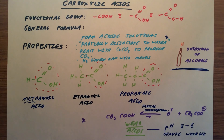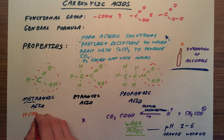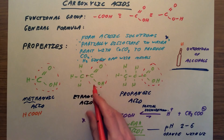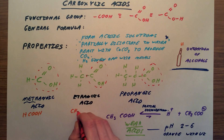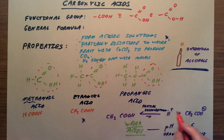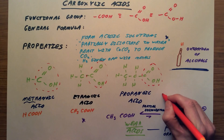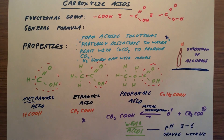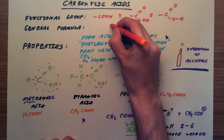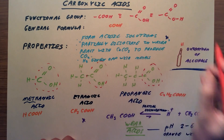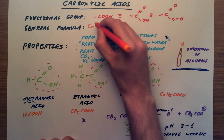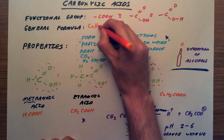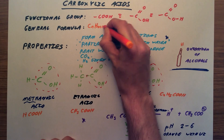Now for the general formula — let's build it up from the basics. Methanoic acid is HCOOH. Ethanoic acid is CH3COOH. Propanoic acid is C2H5COOH. The general formula is a little bit trickier to work out. We're going to keep the COOH on the end, and at the start we have CₙH₂ₙ₊₁.